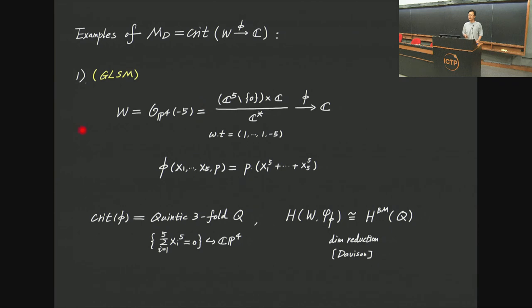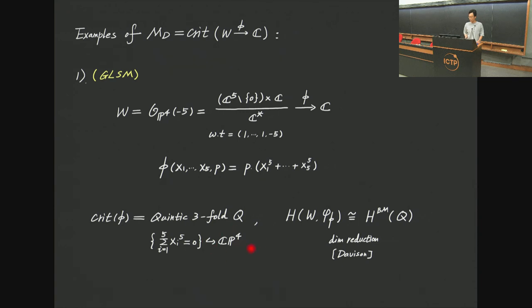Let me give two examples of this critical locus. The first is relevant to the gauge linear sigma model. We consider W to be the total space of the canonical bundle of ℙ⁴, presented as a ℂ* quotient, and write the function φ as P times x₁⁵ + ⋯ + x₅⁵, where P is a coordinate on ℂ. The critical locus is the hypersurface in ℂℙ⁴ cut out by this polynomial equation — the famous quintic threefold — and the vanishing cycle sheaf homology reduces to the ordinary homology of the quintic threefold.